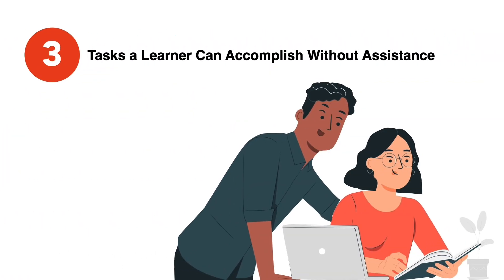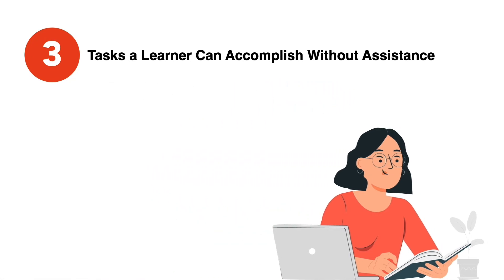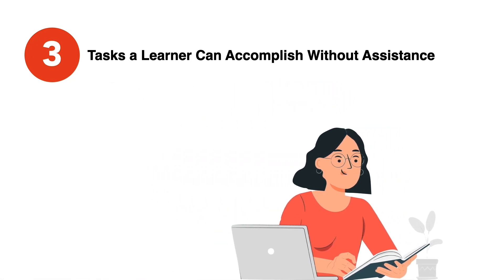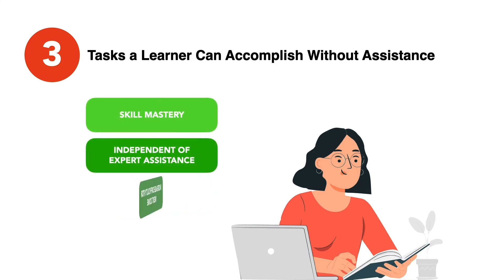Zone 3 – Tasks a learner can accomplish without assistance. In this phase, the learner is able to complete tasks independently and has mastered the skill. The learner does not need the help of an expert. When a learner has reached this stage, the expert may increase the task difficulty level in order to find the learner's next ZPD and encourage further learning.